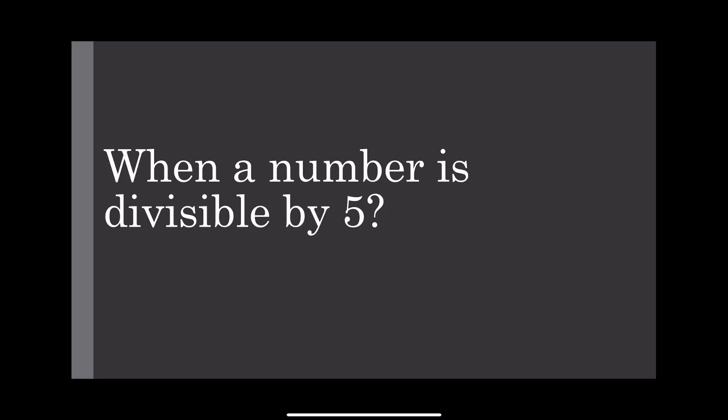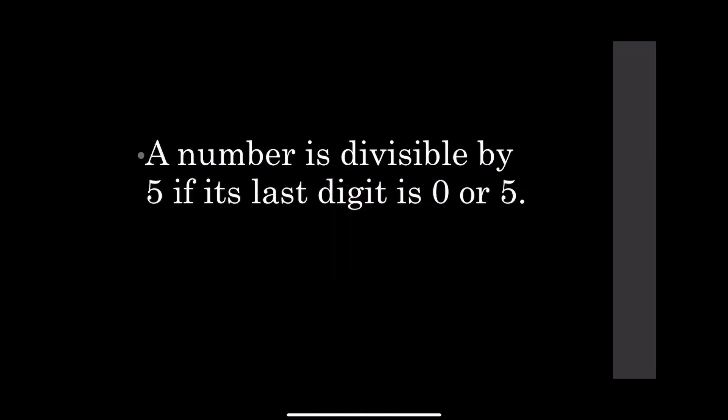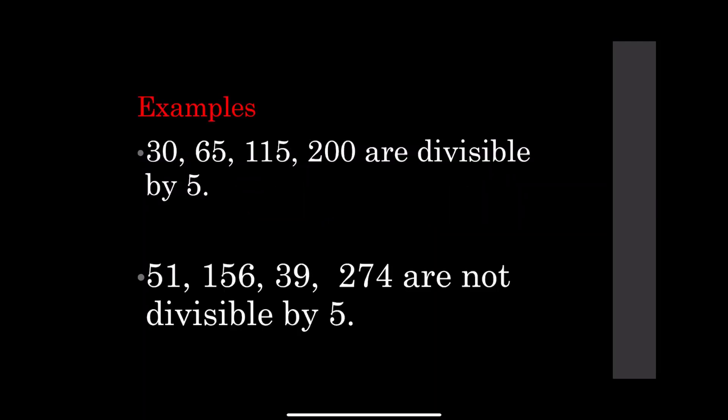Hi everyone and welcome back to my channel. In this video I'll talk about divisibility by 5. A number is divisible by 5 if its last digit is either 0 or 5. So simple! Let's start with examples: 30, 65, 115, and 200.